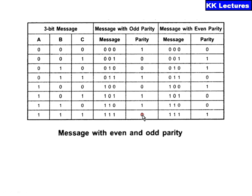For 1 1 1, if I add a 1 the total number of ones becomes even, so to maintain odd parity I add a zero. Similarly for even parity: 0 0 0 has zero ones which is already even, so I add a zero. For 0 1 0, the total number of ones is odd, so to make it even I add a one. For 1 1 1, the total number of ones is odd, so adding a one makes the total even — that is converted to even parity.